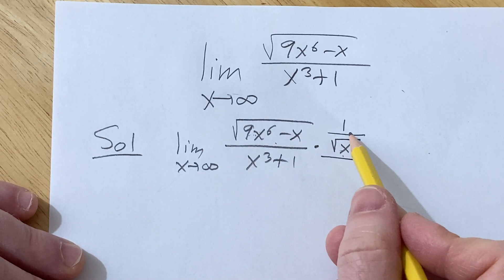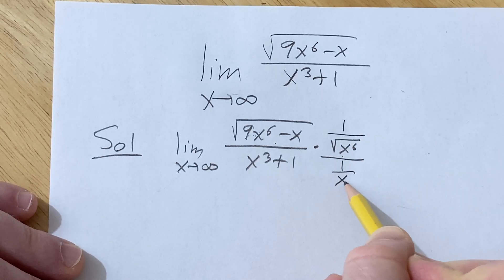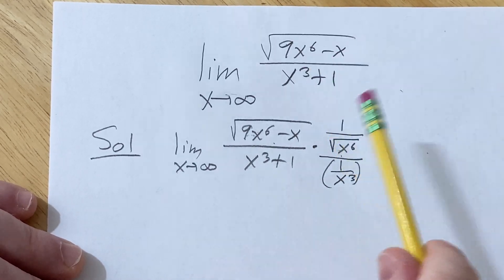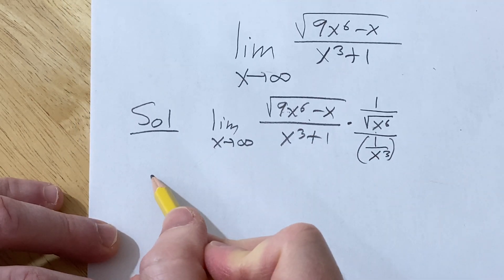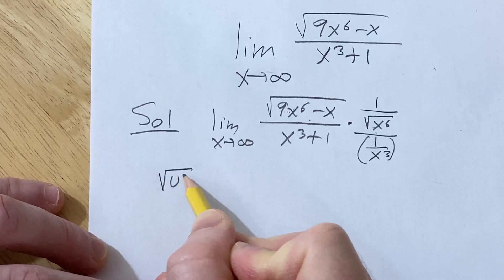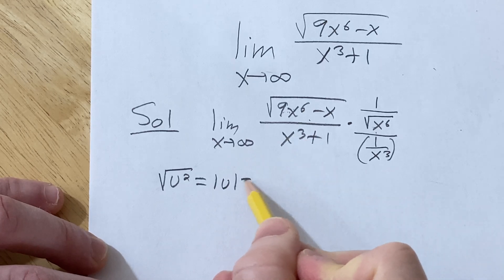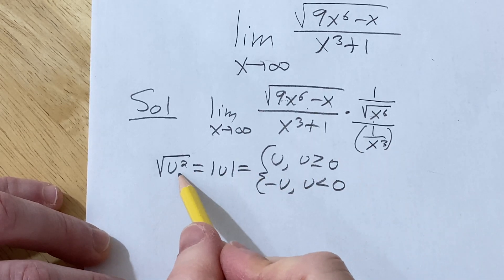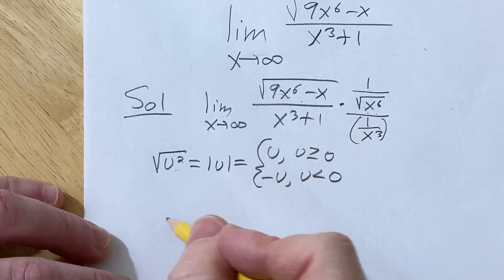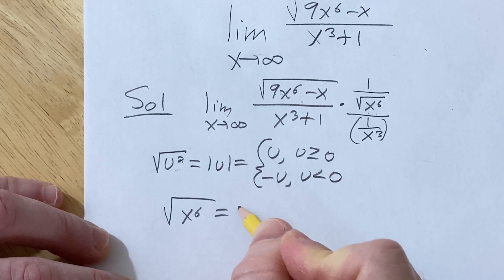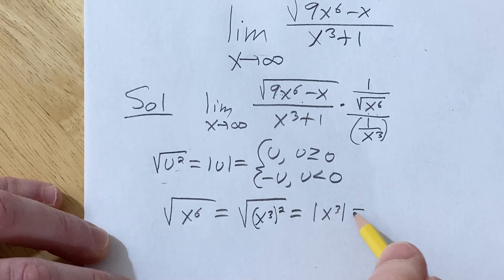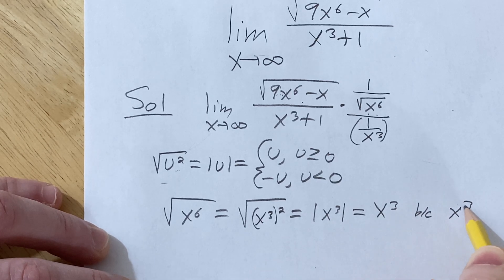But you can't just do that — you have to multiply by 1, so here I'm going to write 1 over x³. And this is actually equal to 1; these cancel because they are actually the same. The reason is this — this is the part that people might struggle with. In general, if you have √(u²), that equals the absolute value of u, which is u if u ≥ 0 and −u if u < 0. In this case it's x³, so √(x⁶) = √((x³)²) = |x³|, which equals x³ because x³ ≥ 0 since x is approaching infinity.